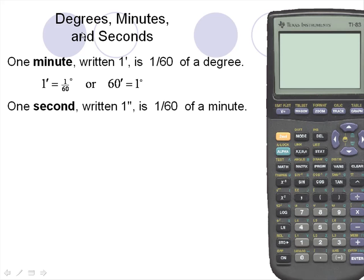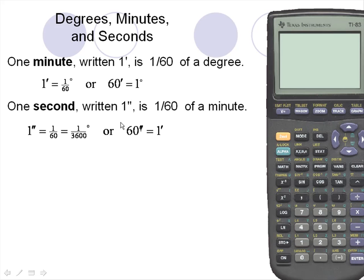One second, which is written as one with two tick marks, is 1/60th of a minute. One second is 1/60th of a minute, which is 1/3600th of a degree. Equivalently, 60 seconds is equal to one minute.